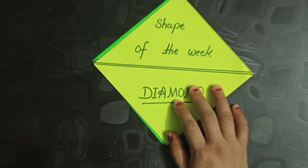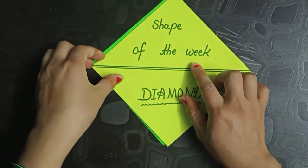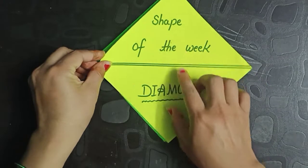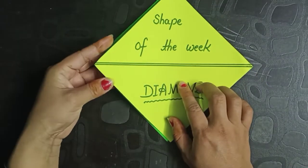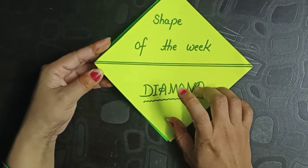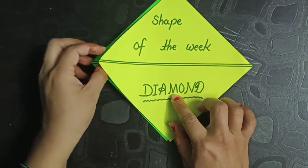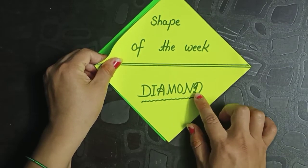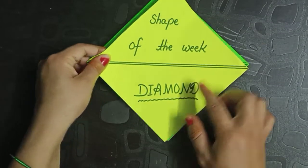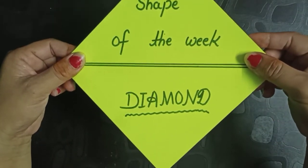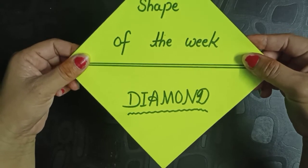Now next one is shape of the week. Shape of the week. Shape of the week is diamond. D-I-A-M-O-N-D. Diamond. Shape of the week is diamond.